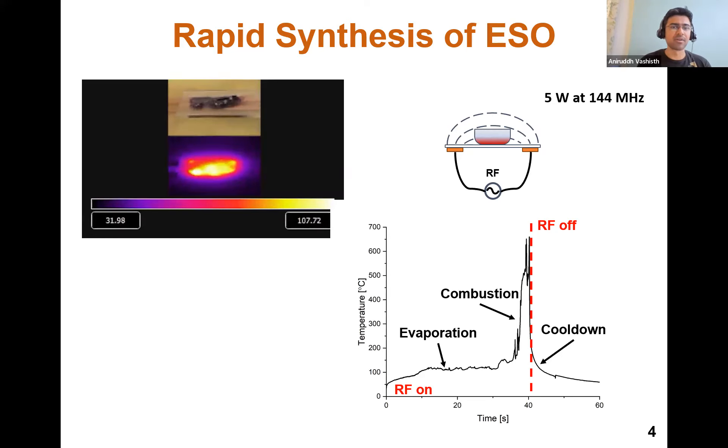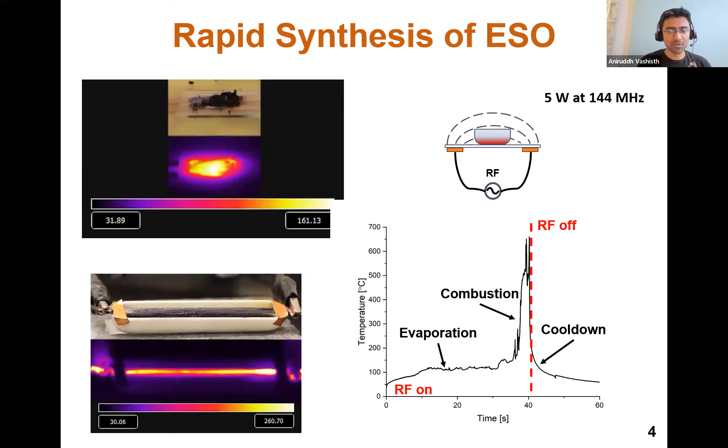Now, this is a huge jump if you think about it—you're able to make and synthesize these materials in a matter of minutes as compared to multiple hours. We also carried out ESO synthesis using direct current, where we ran just a DC current through carbon fibers. On the bottom left, you can see a reaction front forming while the synthesis happens on these carbon fibers.